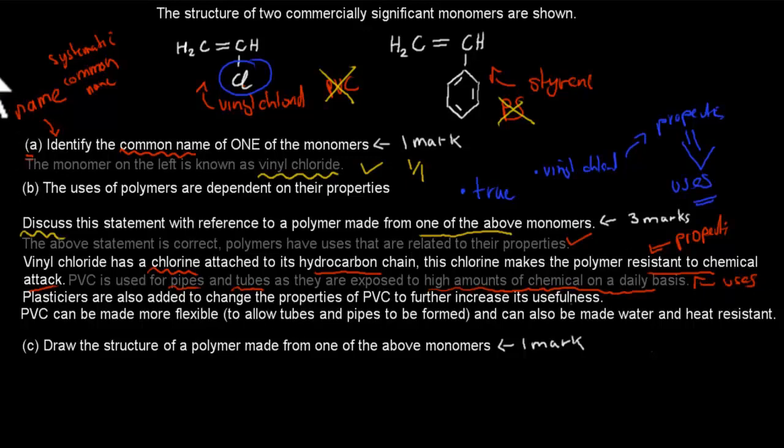But then I also just generally discussed what these plasticizers are and what they can do. And remember with PVC, we can add these plasticizers. So I wrote, plasticizers are also added to change the properties of PVC to further increase its usefulness. So here I've said, yep, the statement was correct. Polymers, the properties are dependent on their uses. And with plasticizers, we can even further change the properties and give it even more uses. So then I just gave a couple of different uses. This was the plasticizer we only used mostly for this vinyl chloride. We don't use that much for styrene. PVC can be made more flexible to allow tubes and pipes to be formed. So that was the property would be higher flexibility if we add those plasticizers. And the use would be it allows us to make tubes and pipes.